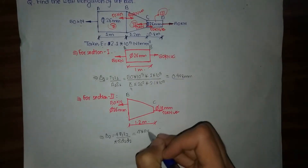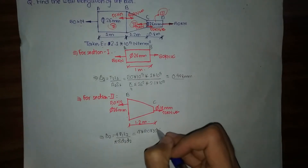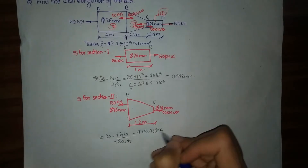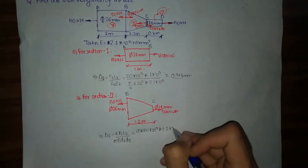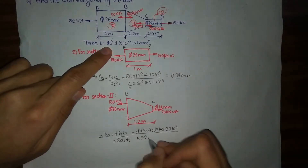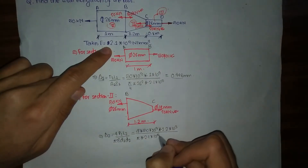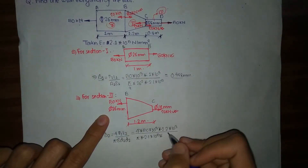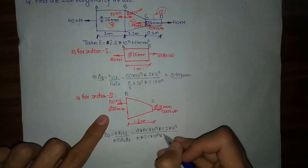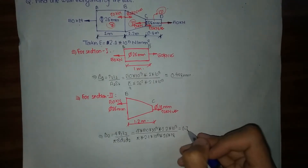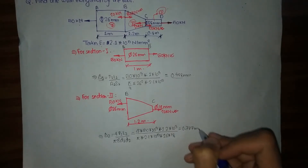We now calculate δ₂: δ₂ = 4 × (50×10³) × (1.2×10³) / (π × 2.1×10⁵ × 26 × 18). Solving this gives δ₂ = 0.777 mm.